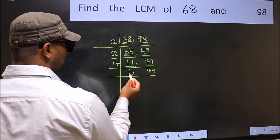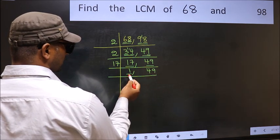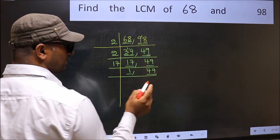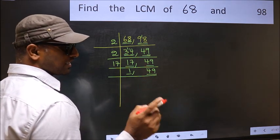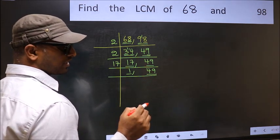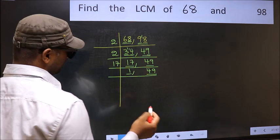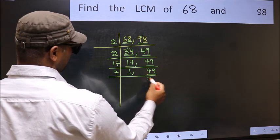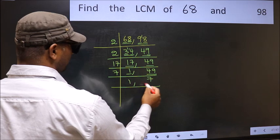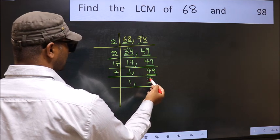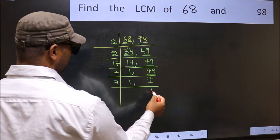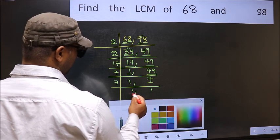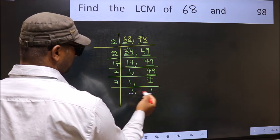Now we got 1 here, so focus on the other number, 49. Always remember: 7 times 7 is 49. Now we have 7. 7 is a prime number, so 7 divided by 7 is 1. We got 1 in both places.